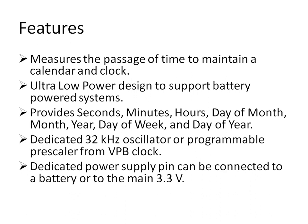These are the features of RTC. It maintains a calendar as well as a clock, and we can also provide supply to this RTC using the main voltage of 3.3 volts or by using a battery power system. It provides seconds, minutes, hours, day of month, month, year, day of week, and day of year — all as outputs of this RTC peripheral. We can also provide the clock signal to this RTC from two sources: one is an external oscillator, or the internal clock coming from the VPB divider.